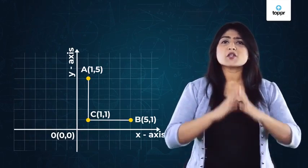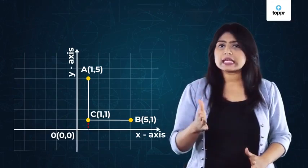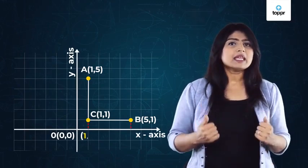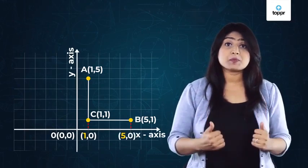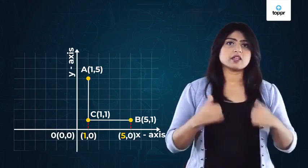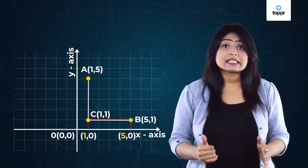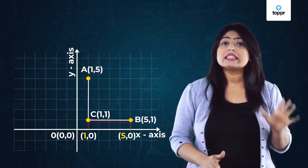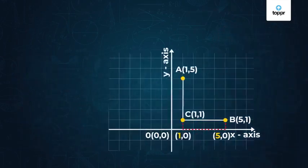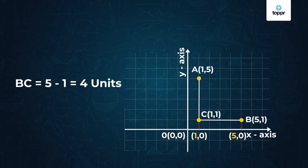Drop perpendiculars to the x axis from C and B. They meet x axis at their respective x coordinates. If you observe closely, you will see that the length of BC is the difference of these x coordinates. So, length of BC is equal to 5 minus 1 which is 4.